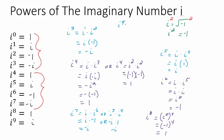Let's verify with i to the ninth. We could do i times i to the eighth. i to the eighth we just figured out was 1, so i times 1 is i — and that's verified. So working through exponents up through 9 clearly shows this repeating pattern.